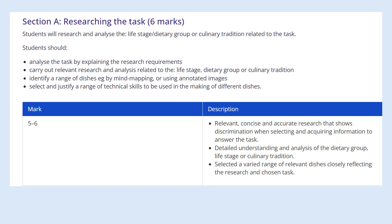This slide shows the marking criteria used by teachers when marking the NEA2 research section. Students should analyse the task by explaining the research requirements, carry out relevant research and analysis related to the life stage, dietary group or culinary tradition, identify a range of dishes by mind mapping or using annotated images, and select and justify a range of technical skills to be used in the making of different dishes.